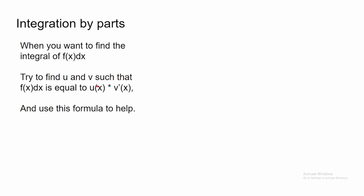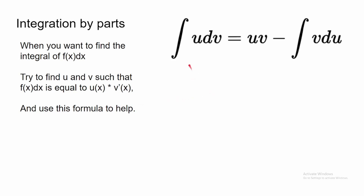So let's talk about integration by parts. When you want to find the integral of f dx, sometimes u-substitution doesn't work. Essentially you should try to find u and v such that f dx equals u·v', where v'(x) is the derivative of v(x). You can use this formula: the integral of u dv can be rewritten as uv minus the integral of v du.